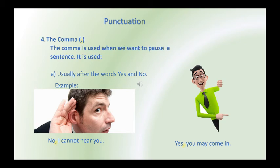The use of comma. The comma is used when we want to pause a sentence. It is used usually after the words yes and no. Example: No, I cannot hear you. Yes, you may come in.